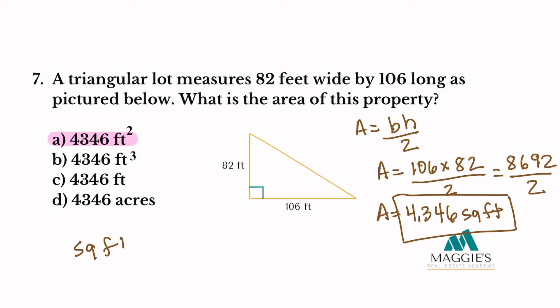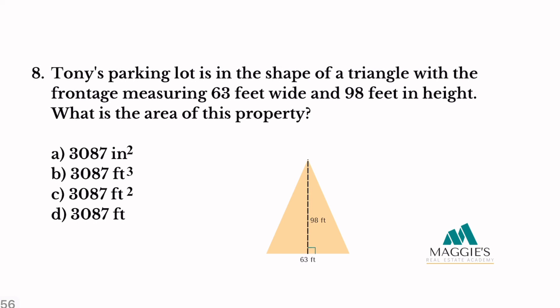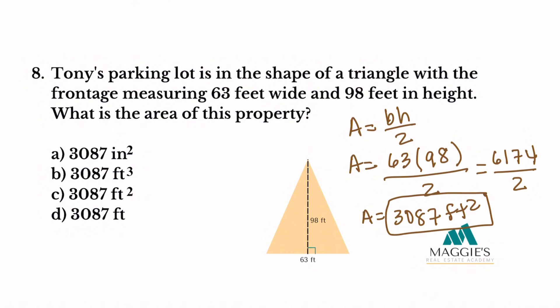Number 8: Tony's parking lot is in the shape of a triangle with the frontage measuring 63 feet wide and 98 feet in height. What is the area of this property? Since we have a triangle, we're going to use the area formula for a triangle, which is area equals base times height divided by 2. Here we're going to name 63 as the base. The height is 98 and then we're going to divide it by 2. So 63 times 98 equals 6,174 and then remember to divide by 2. So my total area for this figure equals 3,087 square feet. So the answer to this one is C.